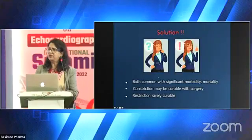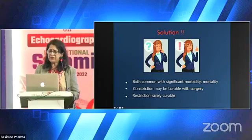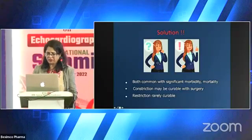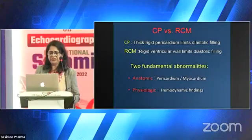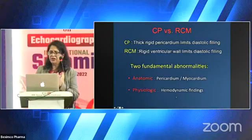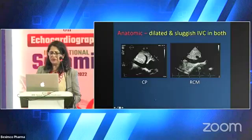So we need to find a solution. When there is confusion, we need to differentiate because both these diseases are quite common with significant morbidity and mortality. One is curable with surgery — constriction — whereas the other is rarely curable. The differentiation relies on anatomic and physiologic findings: one involves pericardial abnormality, the other myocardial and physiologic deformities.